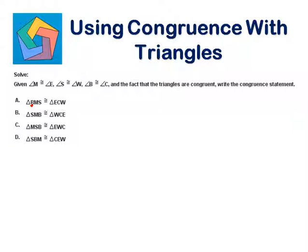Let's look at the answer options. Option B has angle B congruent to angle E — not true. Option C has angle B congruent to angle C — correct; angle S congruent to angle W — correct; angle M congruent to angle E — correct. So this is the correct option.